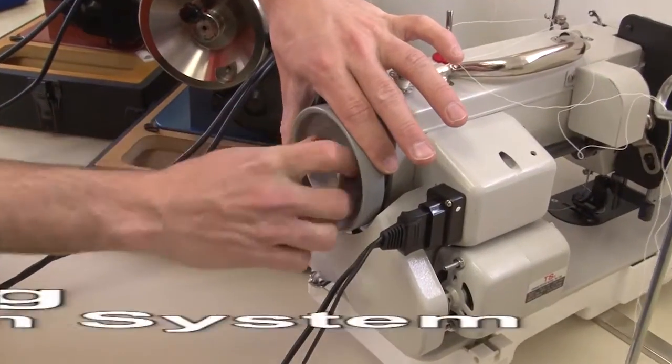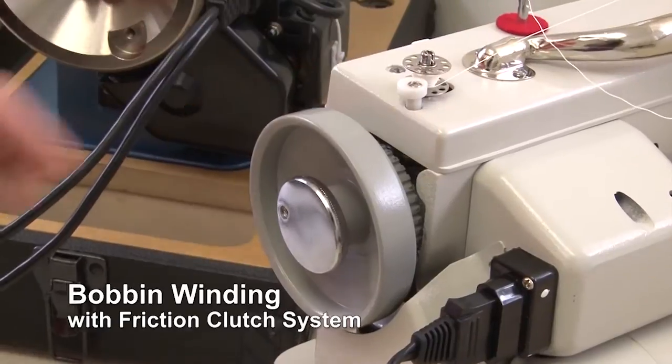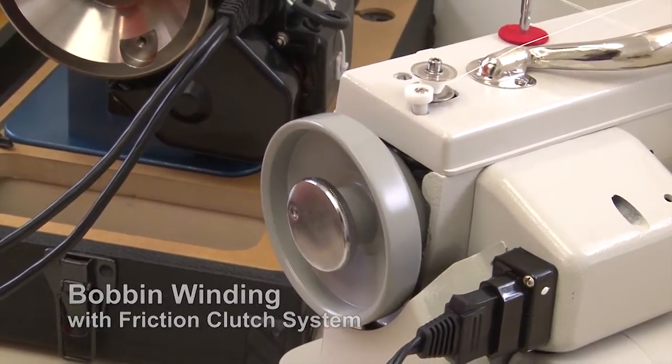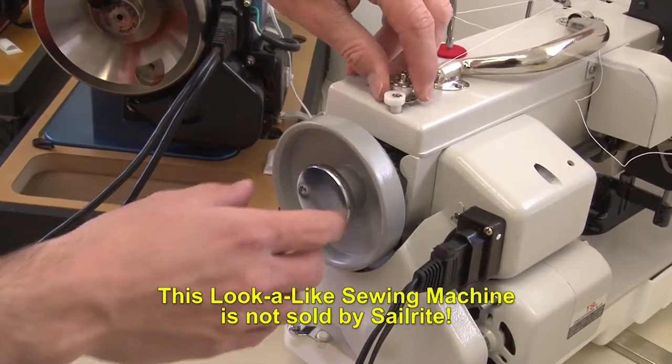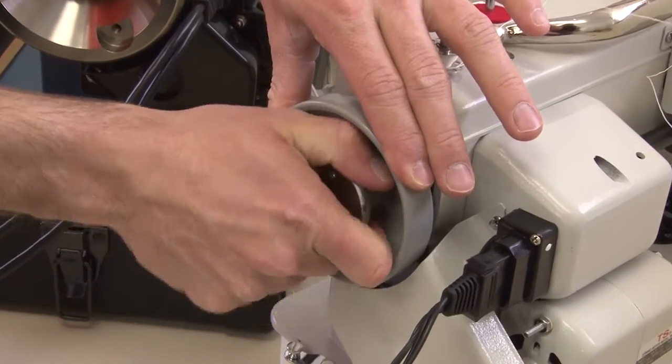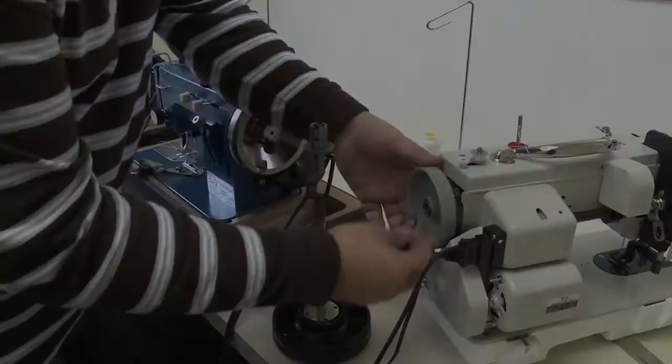This lookalike sewing machine has a friction clutch knob. Release the knob, push the bobbin over and you're ready to wind bobbins. Sounds pretty loud. When you're done winding bobbins, just kick the bobbin over and then lock the friction clutch knob down as hard as you can.